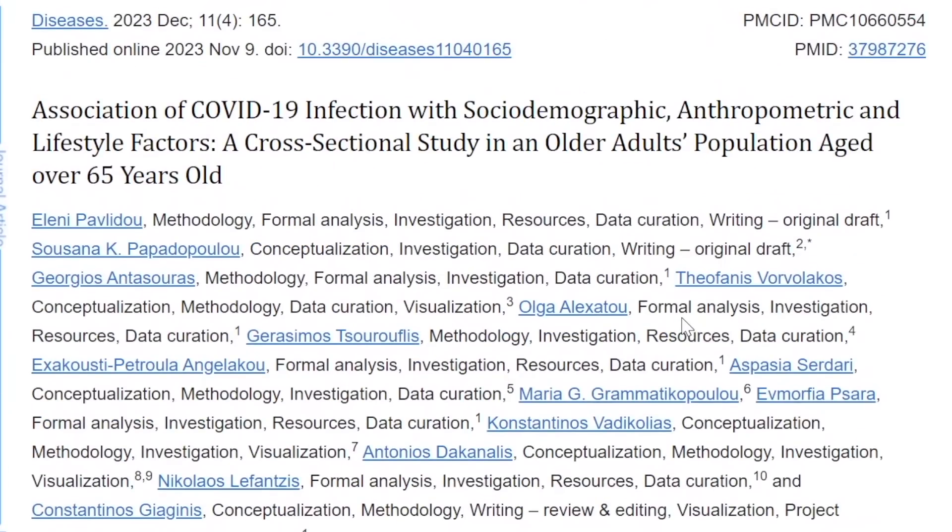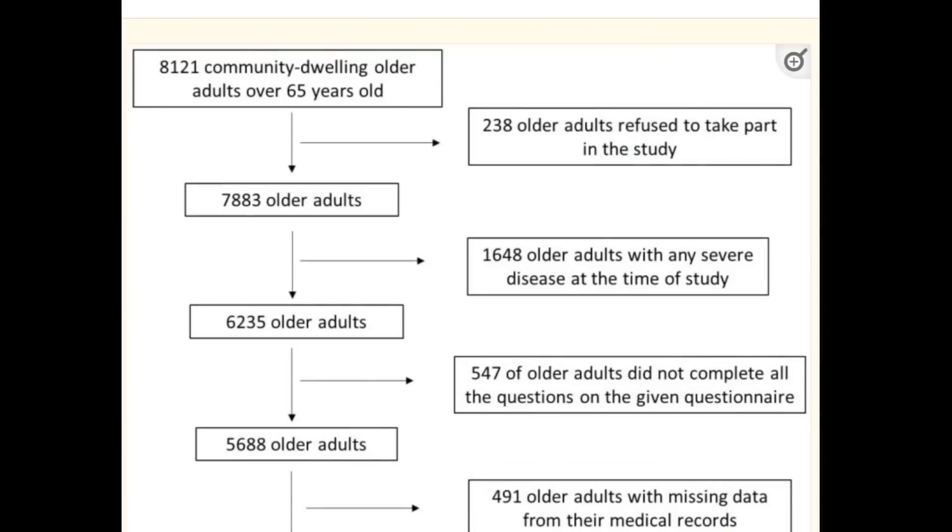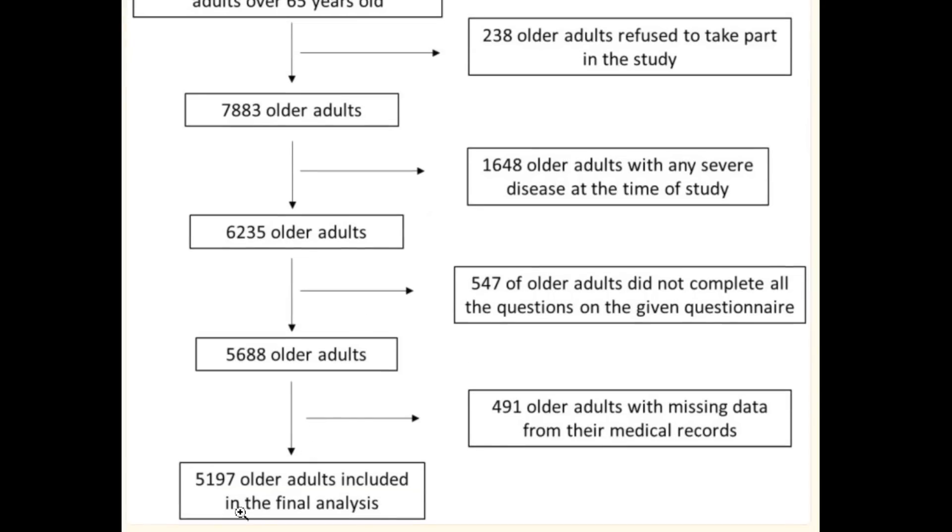This study was published in Diseases in 2023, just last month in December, titled The Association of COVID-19 Infection with Sociodemographic, Anthropometric, and Lifestyle Factors, a cross-sectional study in an older patient's population aged over 65 years old. This was in Greece and they found about 8,121 community-dwelling older adults over the age of 65, and that got whittled down to about 5,100.